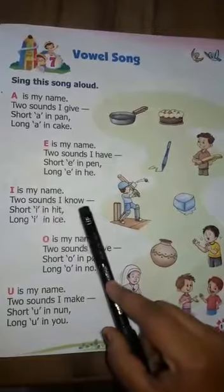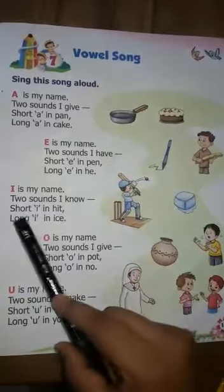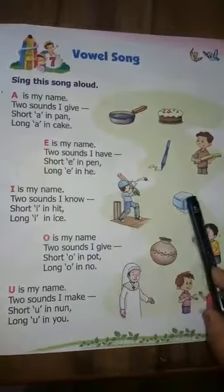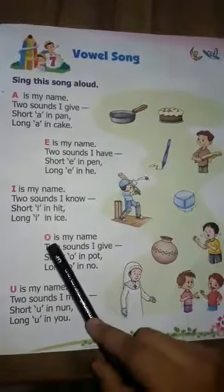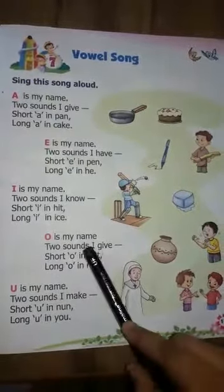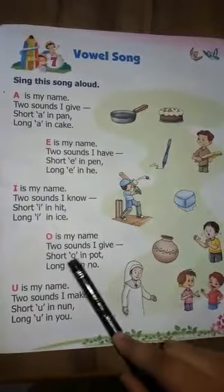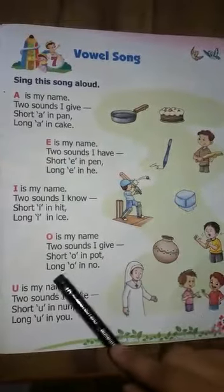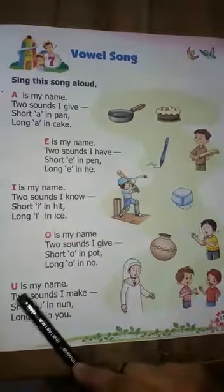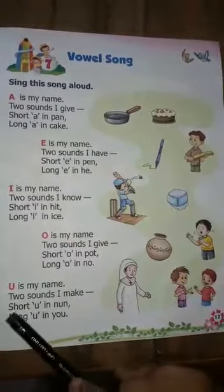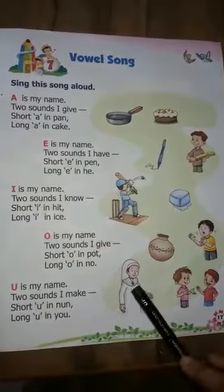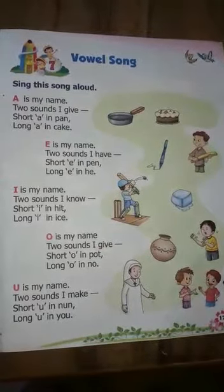I is my name. Two sounds I know. Short I in heat. Long I in ice. O is my name. Two sounds I give. Short O in pen. Long O in no. U is my name. Two sounds I make. Short U in none. Long U in U.